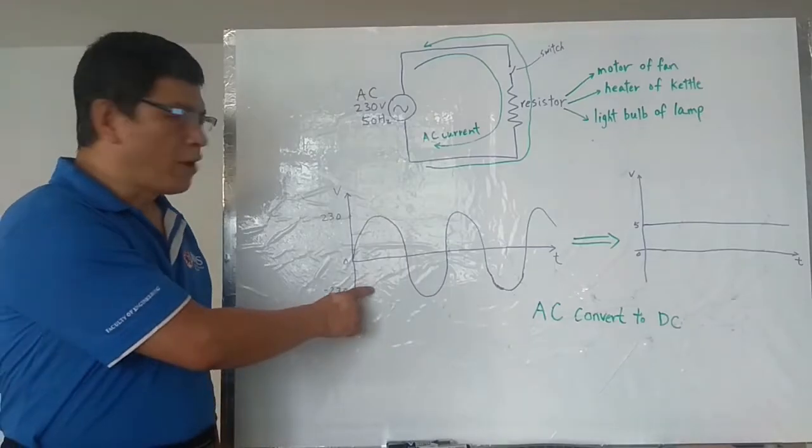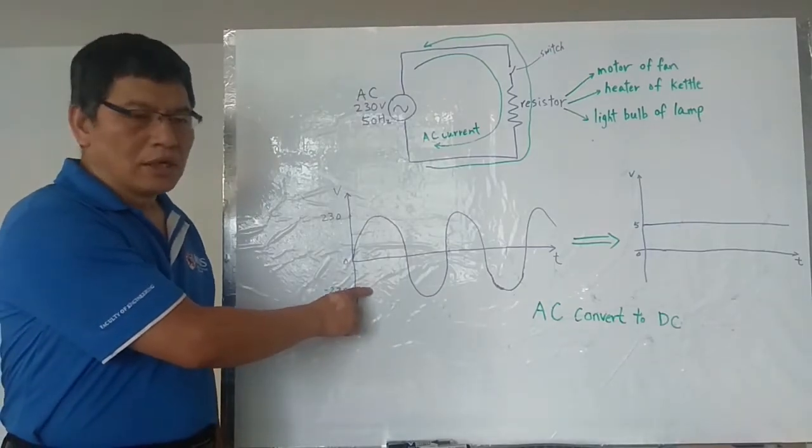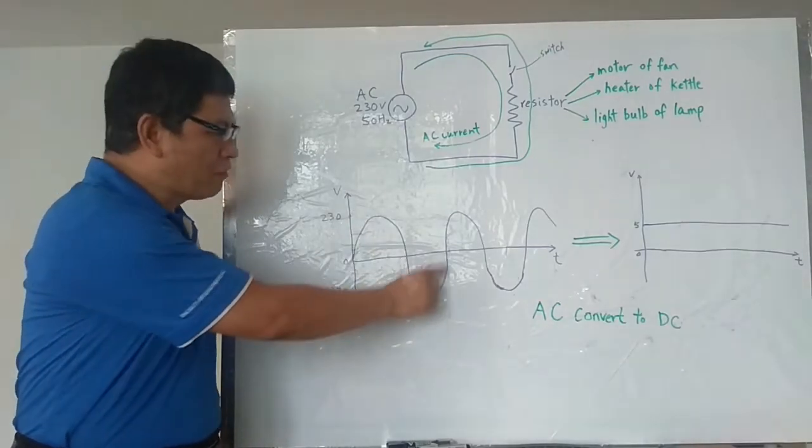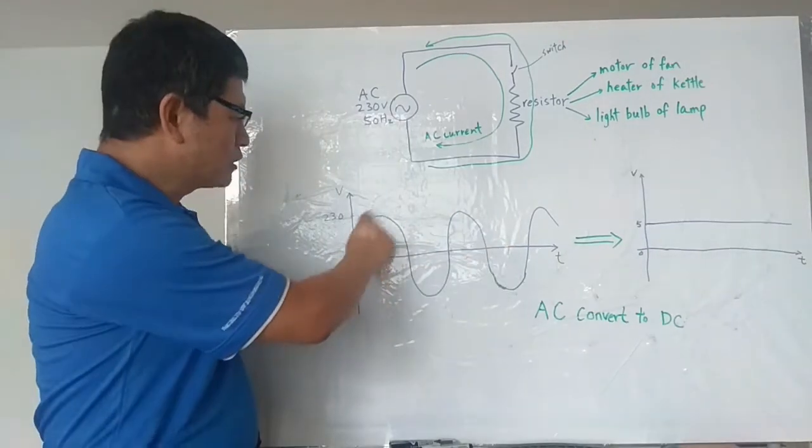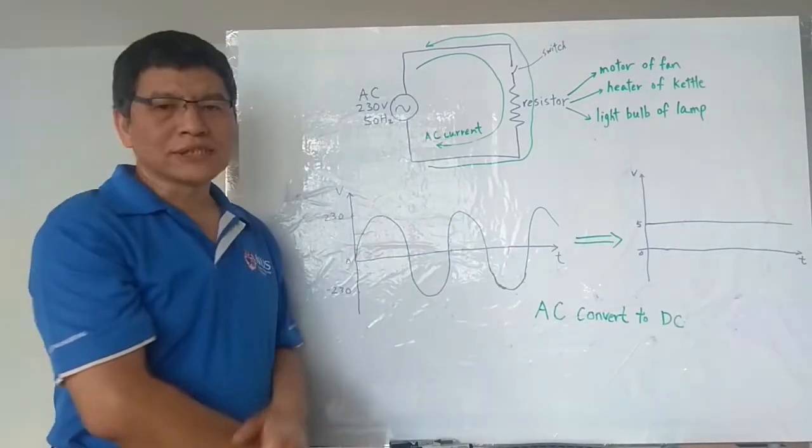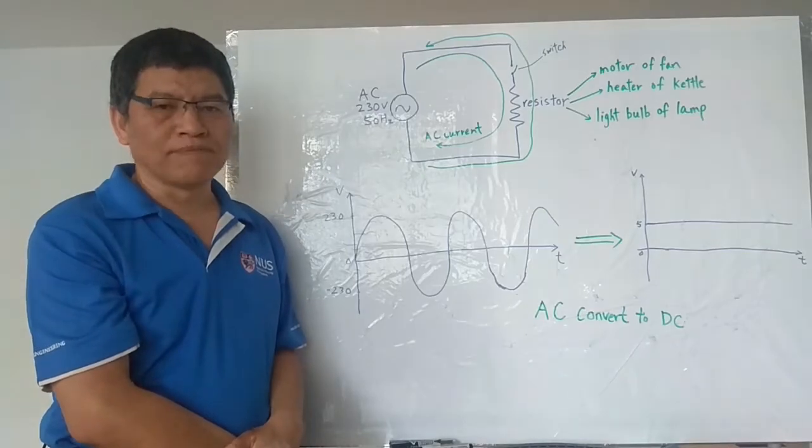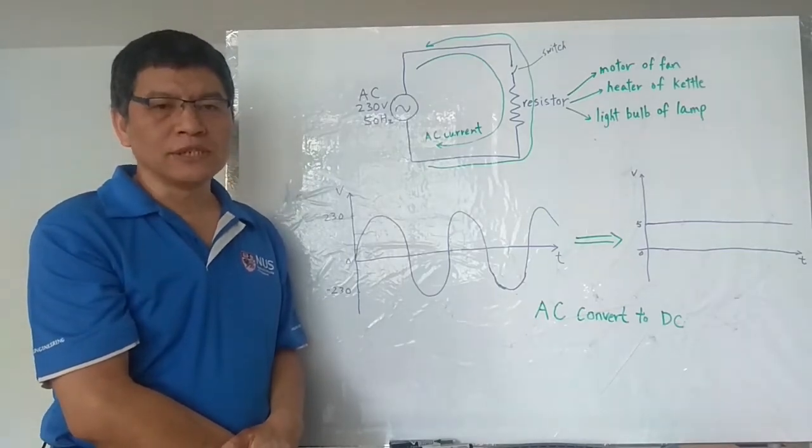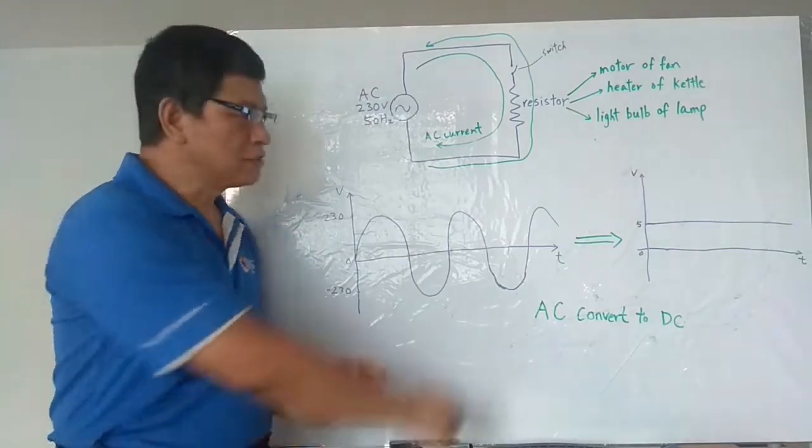This is the waveform for AC current. It moves forward, backward, forward, backward. The waveforms keep going up and down. This kind of current cannot work properly in DC circuits. Most of DC circuits need constant DC voltage like this one.